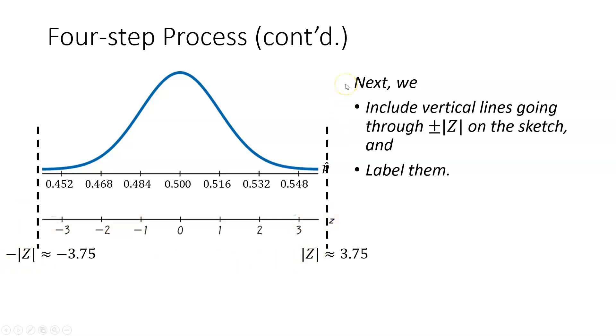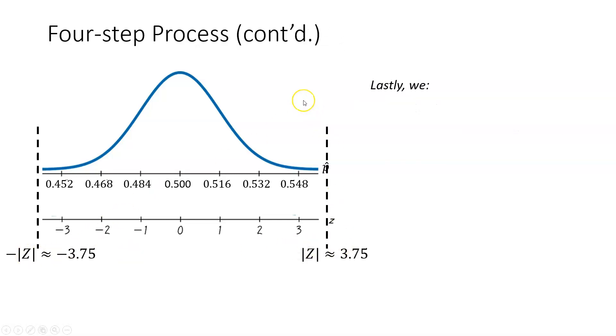Let me stop for a moment and explain why we have to include those absolute value symbols. The reason is because sometimes our Z-score might be negative. And when it is, then we have to take the absolute value in order to get a positive value for use on our sketch. So you do need to be careful about including those absolute value symbols when you label the Z-score values on the sketch.